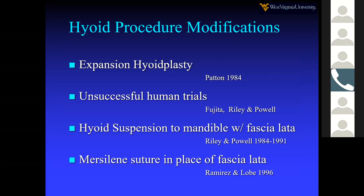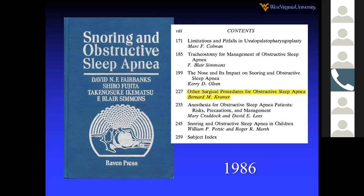The history of hyoid suspension began with Patton in 1984, first tested in dogs. When tried in humans, the early technique was unsuccessful. Fujita, Riley, and Powell used hyoid suspension, and Riley described encircling the hyoid body with fascia lata and wiring it to a repositioned mandibular bone block. Ramirez and Loeb in 1996 switched to Mersilene suture instead of fascia lata. The original procedure required harvesting fascia lata from the leg, which added significant morbidity.